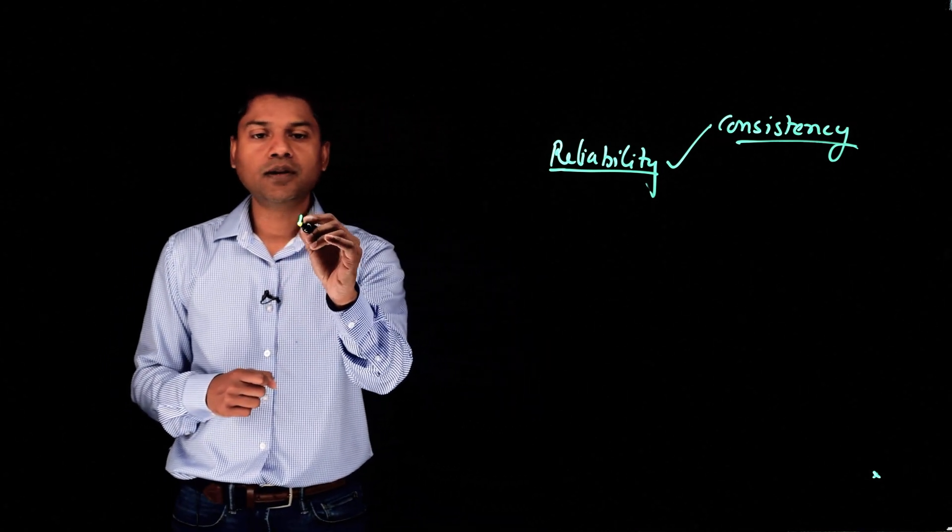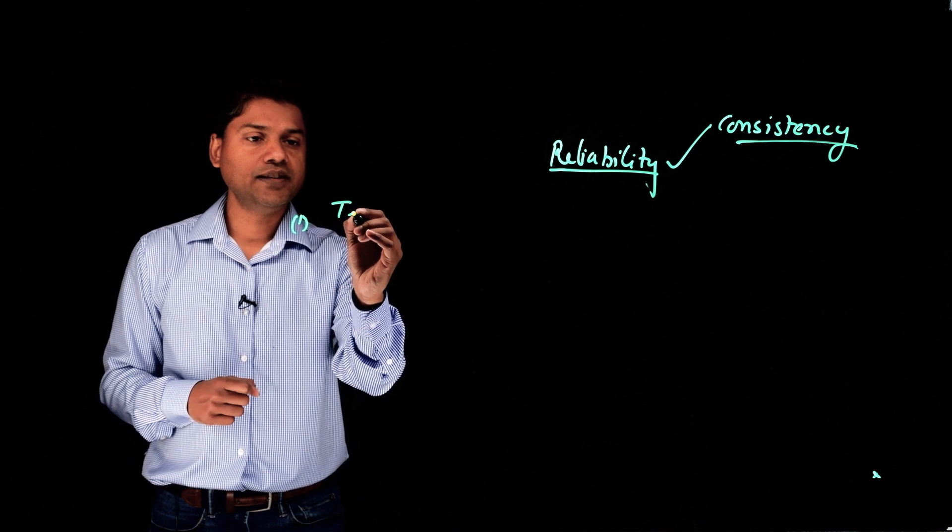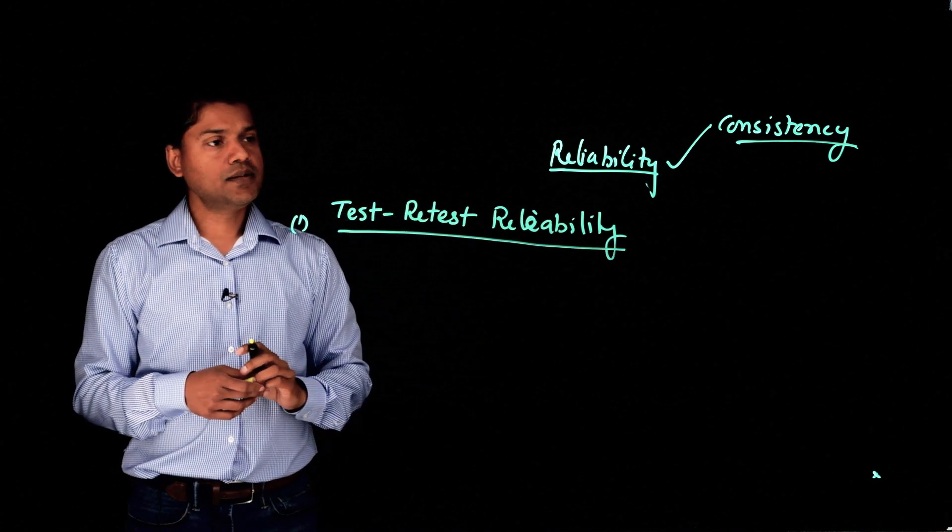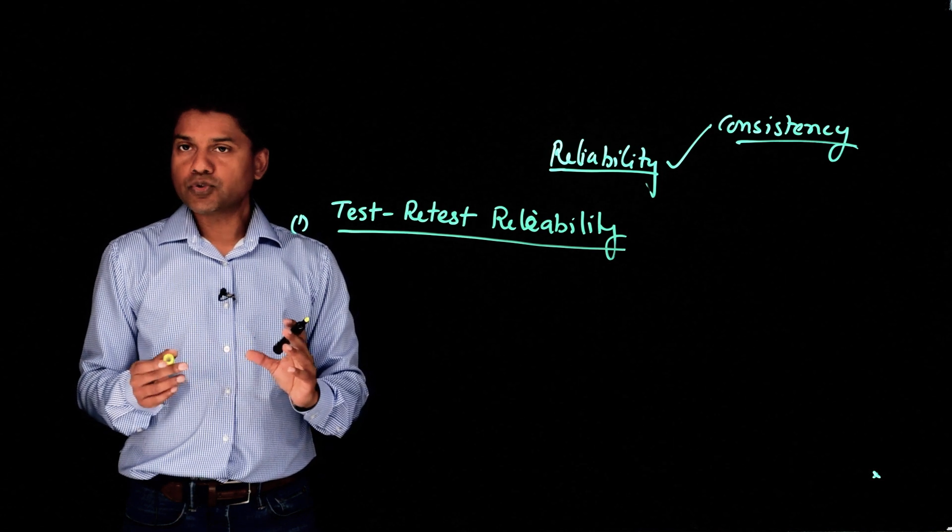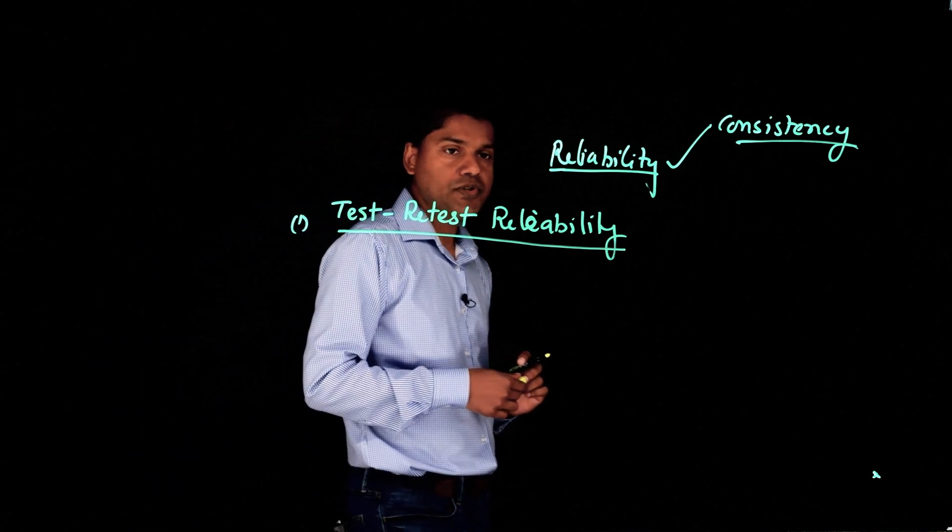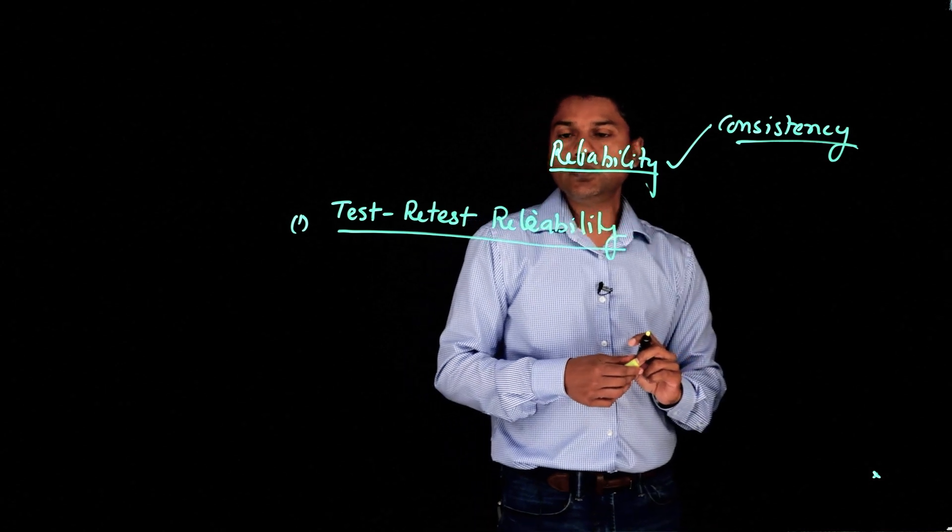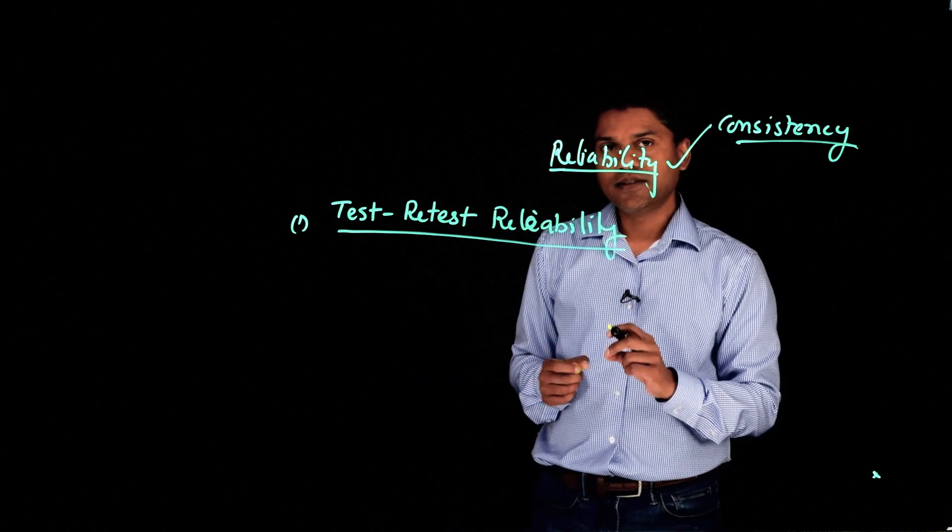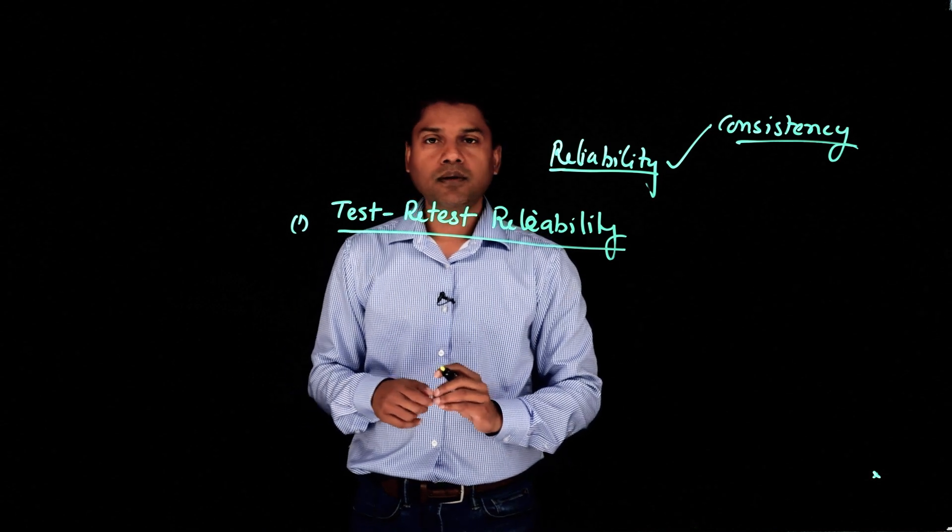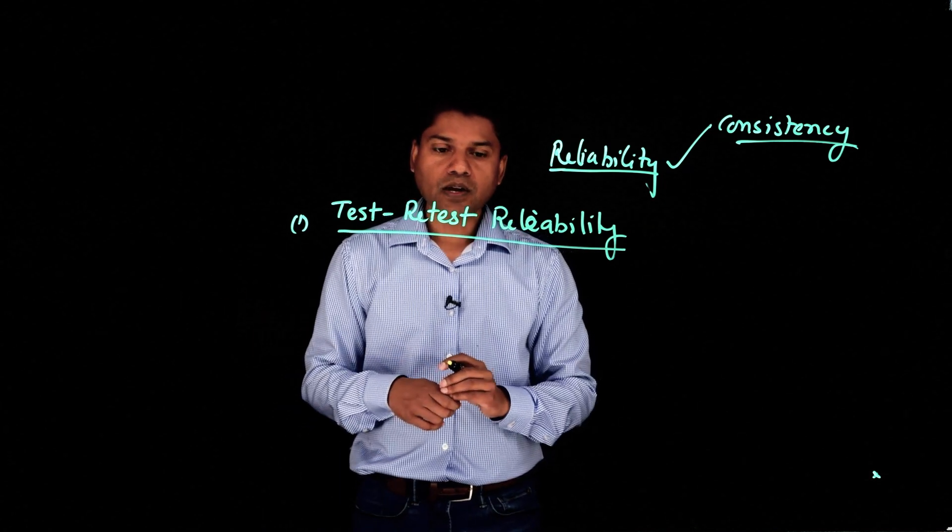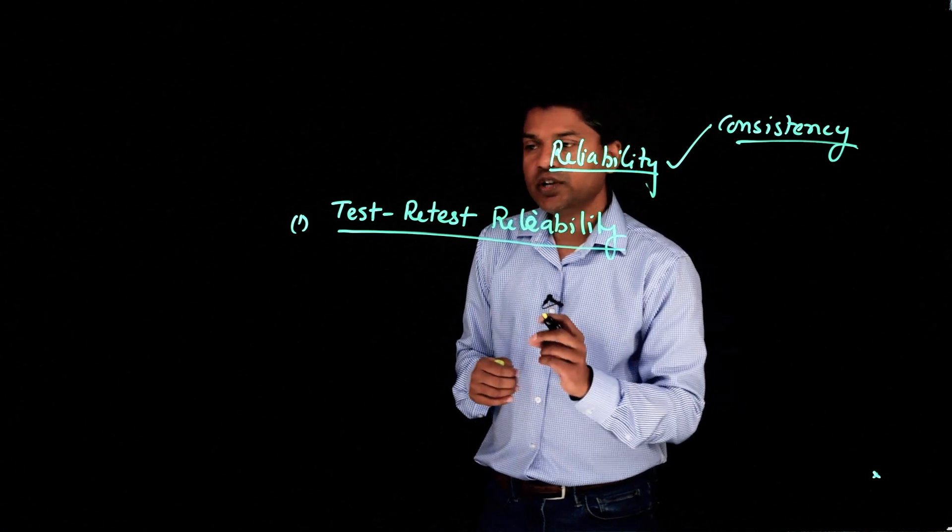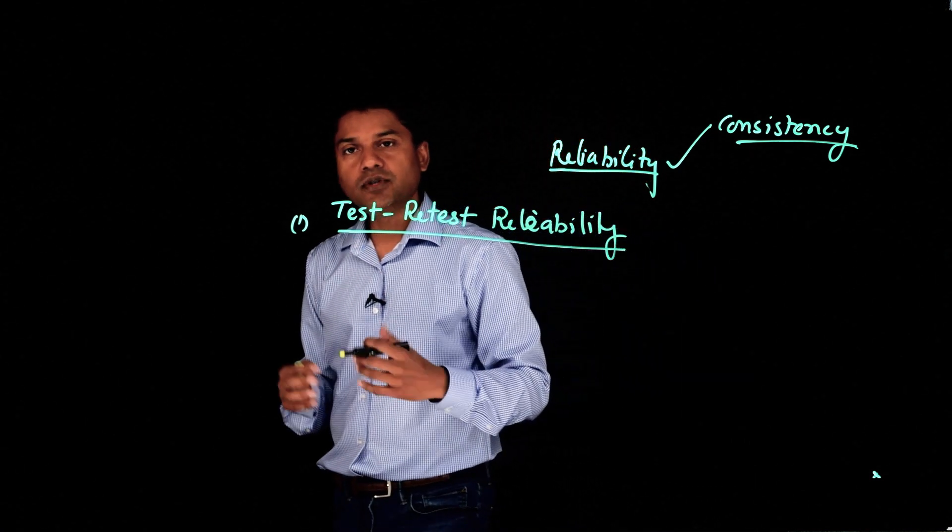And that method is called test-retest reliability. So to measure consistency of an instrument, a test, a scale, a questionnaire, what we do, we give the test to a group of people or maybe one individual. And then after certain gaps, after some time, we give the same test to the same participant.